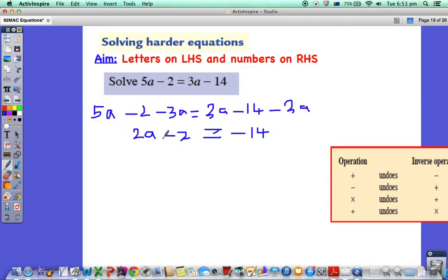Now we've got letters on this side but we've also got these numbers. What is the opposite to minus 2? It is plus 2. So we've got 2a minus 2 plus 2 equals minus 14 plus 2. Looking at this side, negative 2 plus 2 cancels out, so I'm left with 2a equals minus 12.